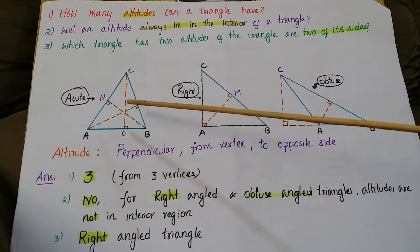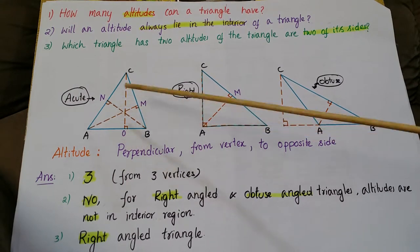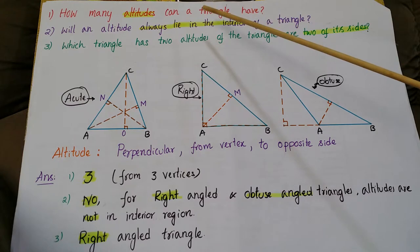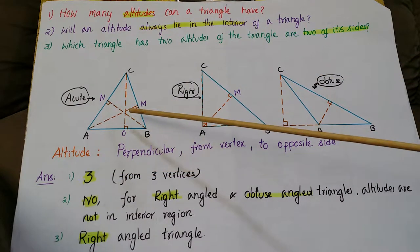For a triangle there are three altitudes. Three vertices are there. Three altitudes we can draw in a triangle. The first one, the answer is three altitudes for a triangle.